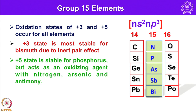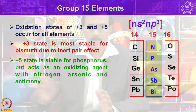Plus 3 and plus 5 occur for all elements, whereas heavier elements, especially bismuth, show plus 3 as the most stable oxidation state due to the inert pair effect. The plus 5 state is quite stable for phosphorus but acts as an oxidizing agent with nitrogen, arsenic, and antimony.